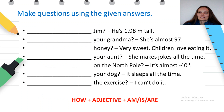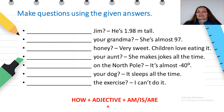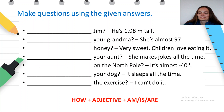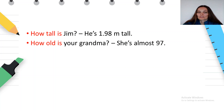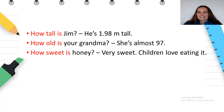Let's continue with the next activity. Make questions using the given answers. Read the answers first and try to make a question. The rule is how plus adjective plus am, is, or are. Pause this video and write the questions in your notebooks. Now let's read and check. How tall is Jim? He is 1.98 meters tall. How old is your grandma? She is almost 97. Very old. How sweet is honey? Very sweet. Children love eating it.